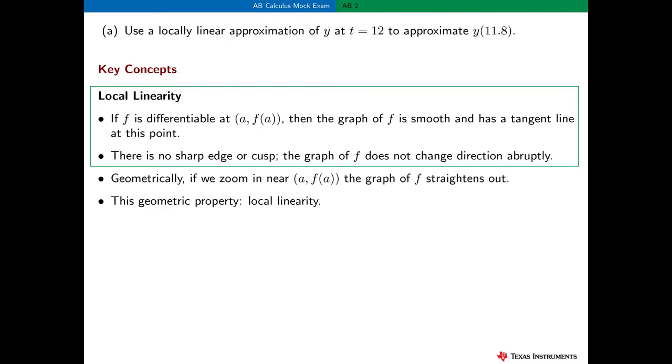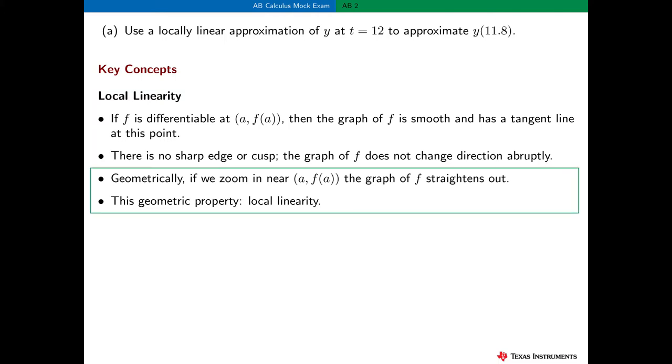Let's suppose that the function f is differentiable at the point (a, f(a)). Then the graph of f is smooth there and it has a tangent line at this point. There is no sharp corner or cusp in the graph of f at that point, and the graph does not change direction sharply or abruptly there. Geometrically, if f is differentiable at a and we zoom in near the point (a, f(a)), then the graph of y = f(x) straightens out and looks more and more like a straight line near the point (a, f(a)). This geometric property is called local linearity.